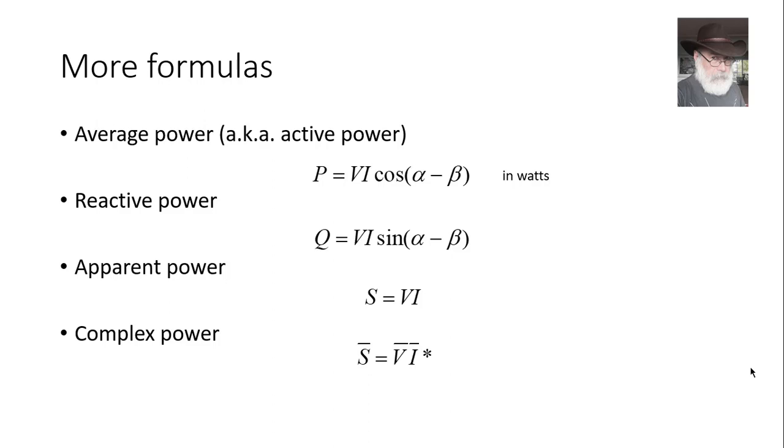P comes in watts, in kilowatts, in megawatts. Q in vars, in kilovars, in megavars. S in volt-amperes, VAs, in KVAs, in MVAs. The units for complex power, by the way, are the same units for apparent power. That is the convention.